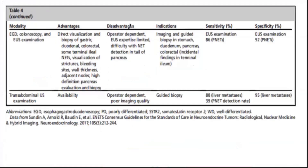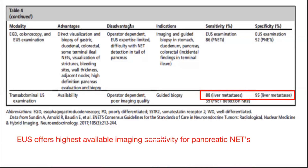For gastric and duodenal neuroendocrine tumors, esophagogastroduodenoscopy; colonoscopy for rectum and colon; and endoscopic ultrasound for pancreatic neoplasms can be used for diagnosis and biopsy. Trans-abdominal ultrasound is indicated for guided biopsy and liver metastasis. Endoscopic ultrasound has the highest imaging sensitivity for pancreatic neuroendocrine tumors.